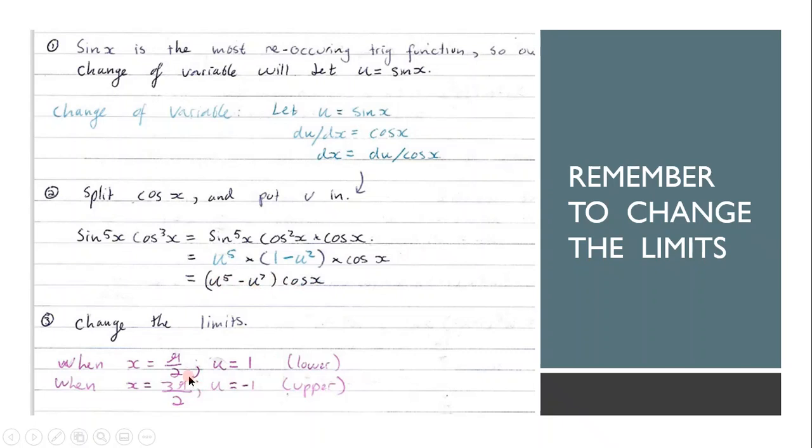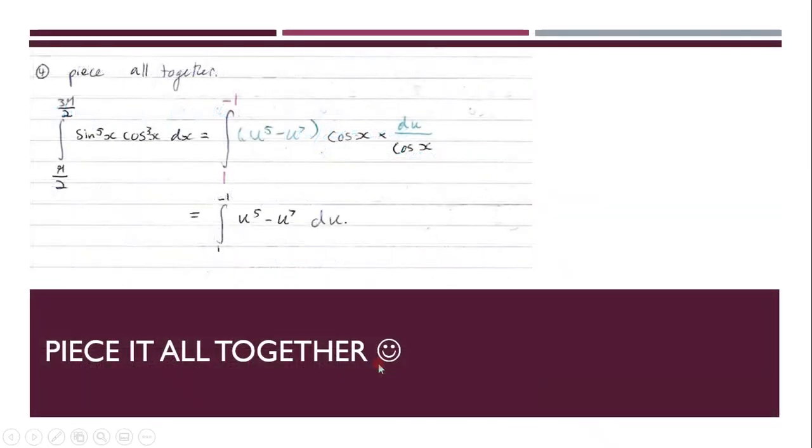Now, remember to change the limits. This is a mistake I do, and I'm sure a lot of other people do. So put it in this format and indicate which limit is which. So this is the lower limit, and this is the upper limit. Then you piece it all together. You put in the limits you found. You put in the change of variable, and as you can see, the cos x cancels out, which is lovely.